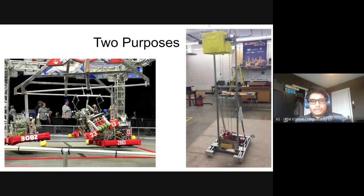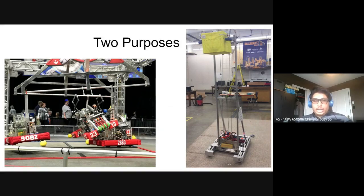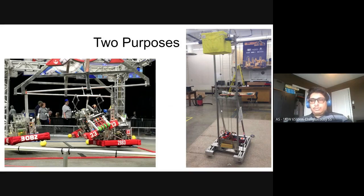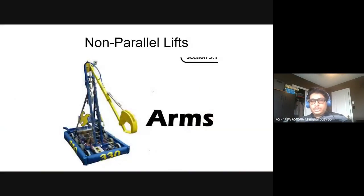There are basically two main purposes for lifts. You either want to get an object on the floor higher up - which is what you see on the right-hand side - or you want to get a robot on the floor higher up, which is typically called hanging, and was prevalent in last year's game. There was a switch which you can see in the image, where your robot would have to go and hang on top of that. So you're taking the robot from the ground up, or taking some type of object - like that yellow box - and using a lift to raise it up high.